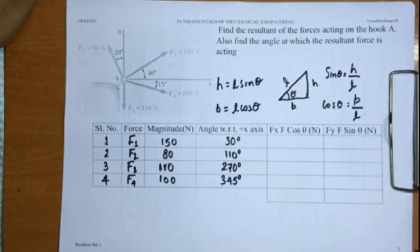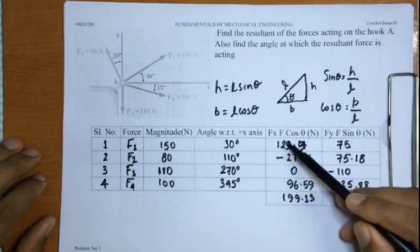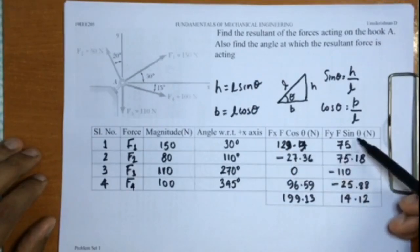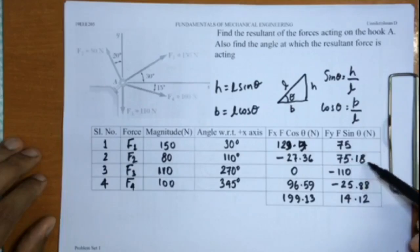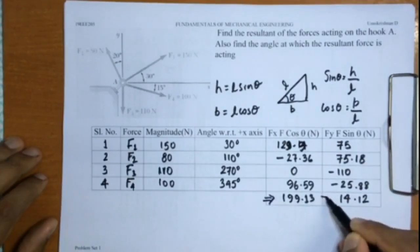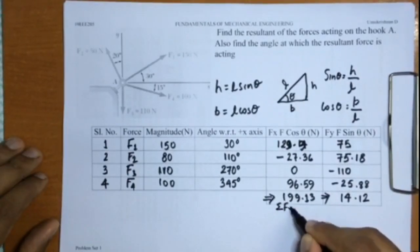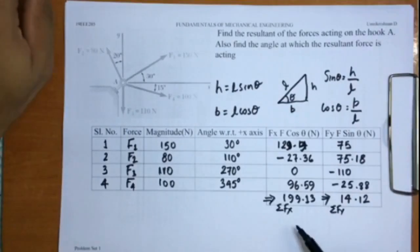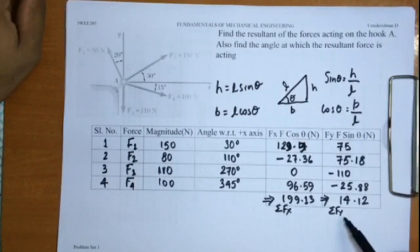I have found out Fx and Fy. Fx for the first F1 force turns out to be 129.9, Fy is 75. For F2, Fx will be minus 27.36, Fy would be 75.18. Likewise I have found out Fx and Fy, and these numbers are the summation of all these forces - that is sigma Fx and this is sigma Fy. So this represents the sum of forces in the x and sum of forces in the y direction.